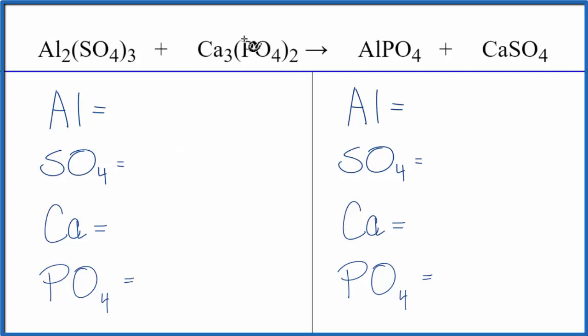Same for the phosphate ion, PO₄. We have it here, it stays together, we have one right here, so we'll just count it as one item. That'll make it a lot easier to keep track of all the atoms as we balance this equation. Let's do it.